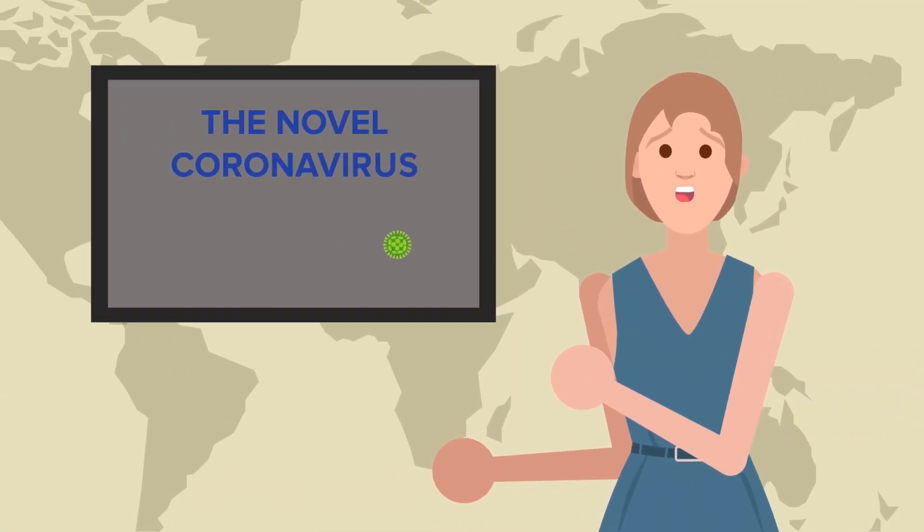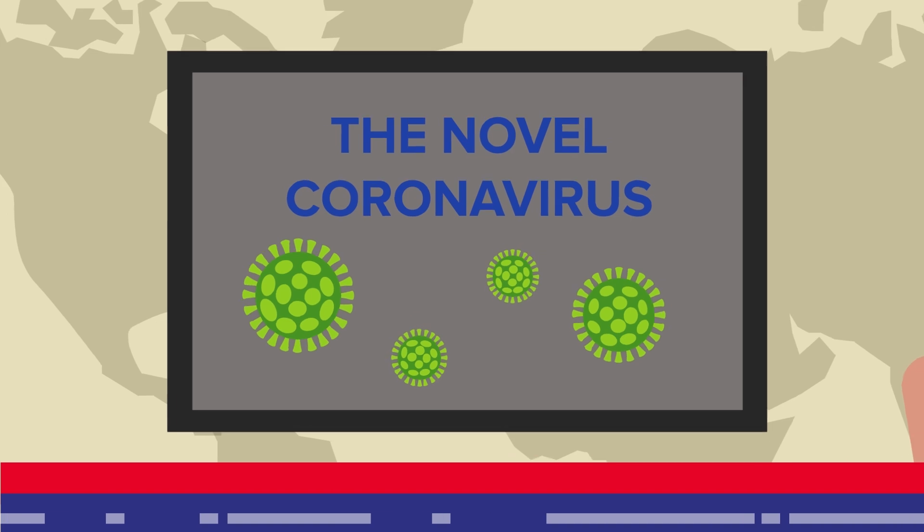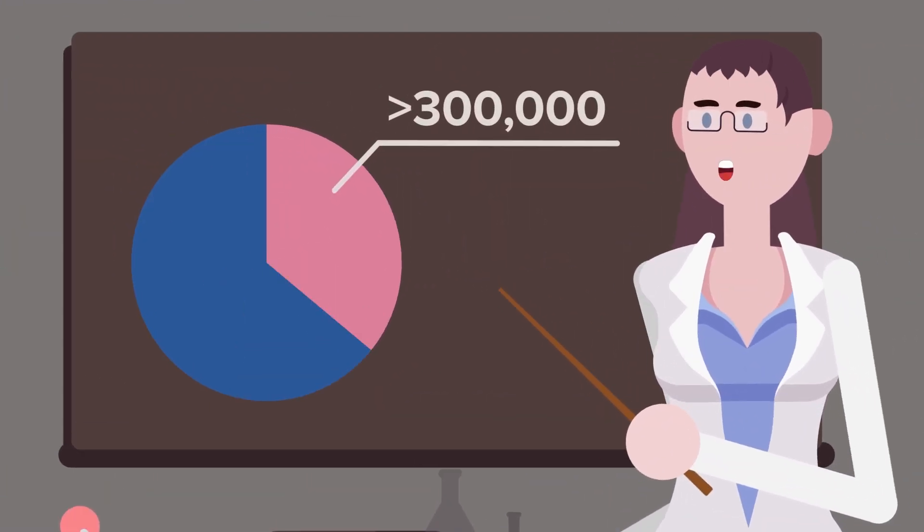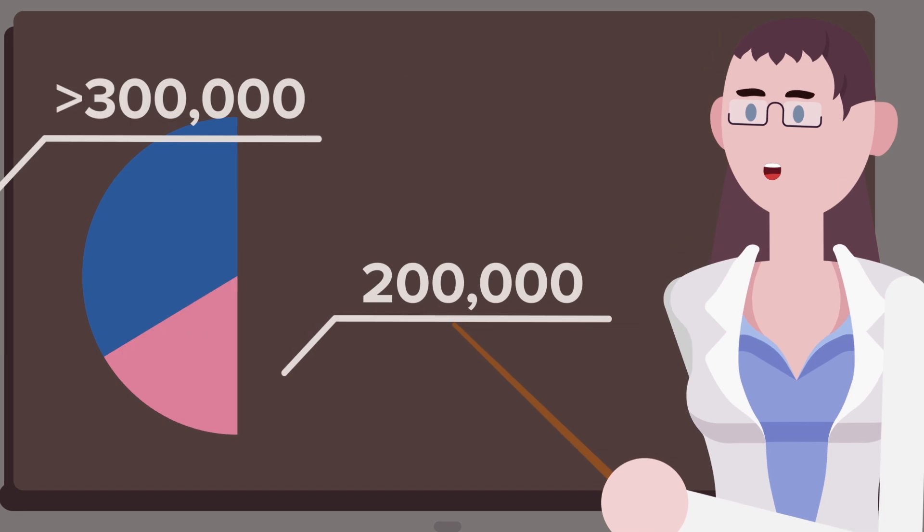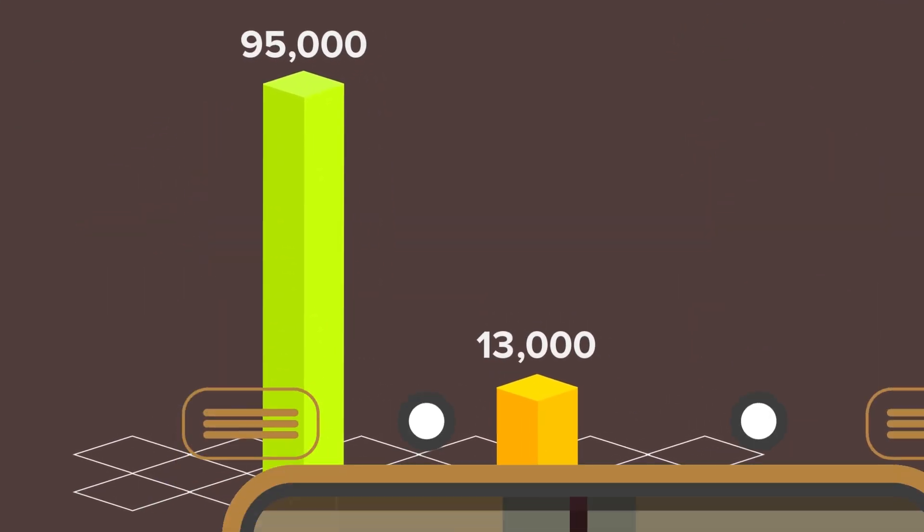Since the initial public reports of the novel coronavirus on December 31, 2019, we've had over 300,000 confirmed cases, nearly 200,000 of which are still active. While recoveries are vastly outnumbering deaths, 95,000 to 13,000 at the time of this counting.